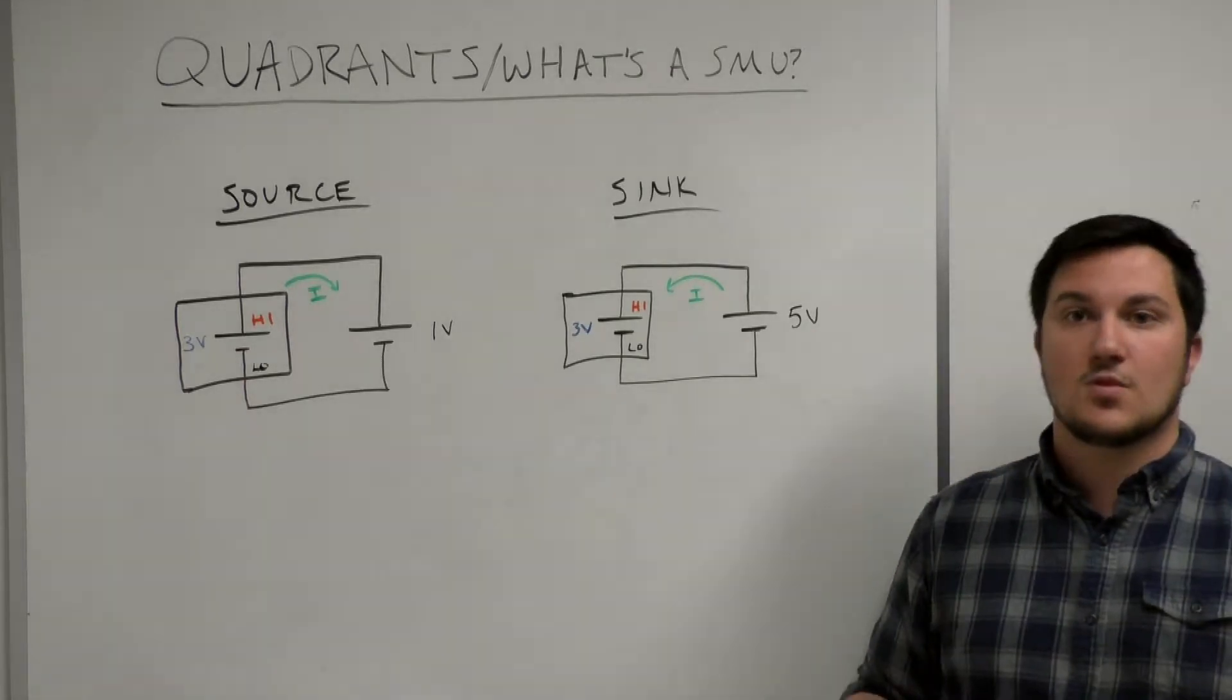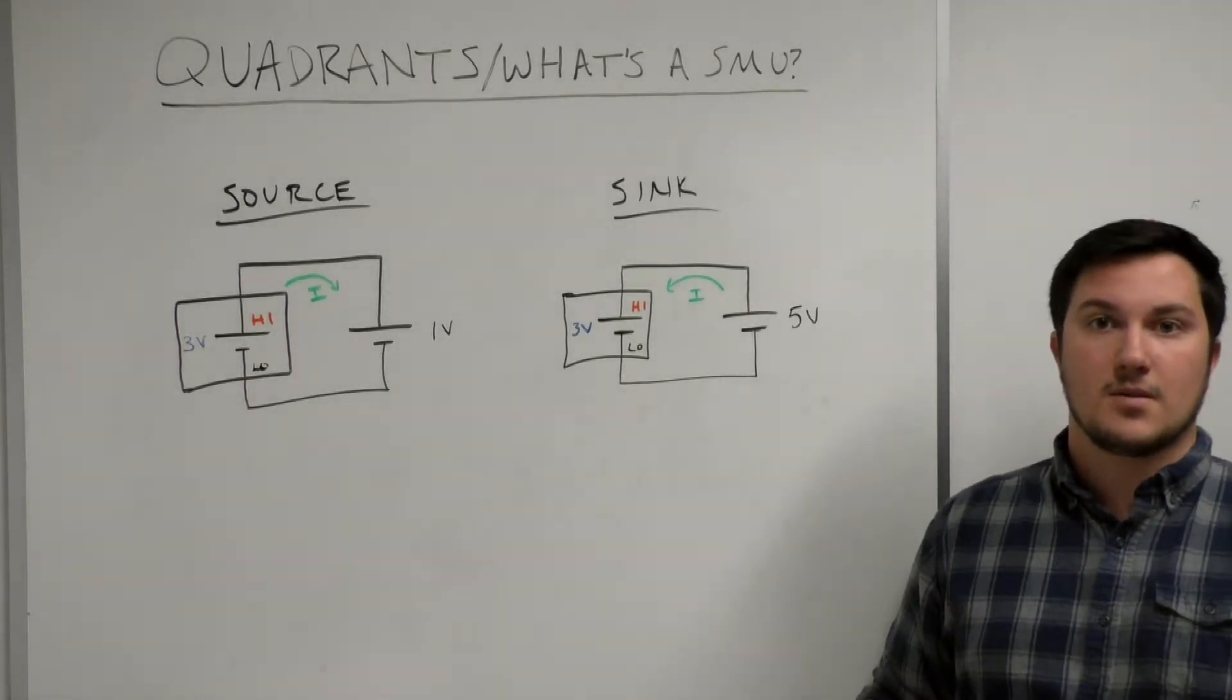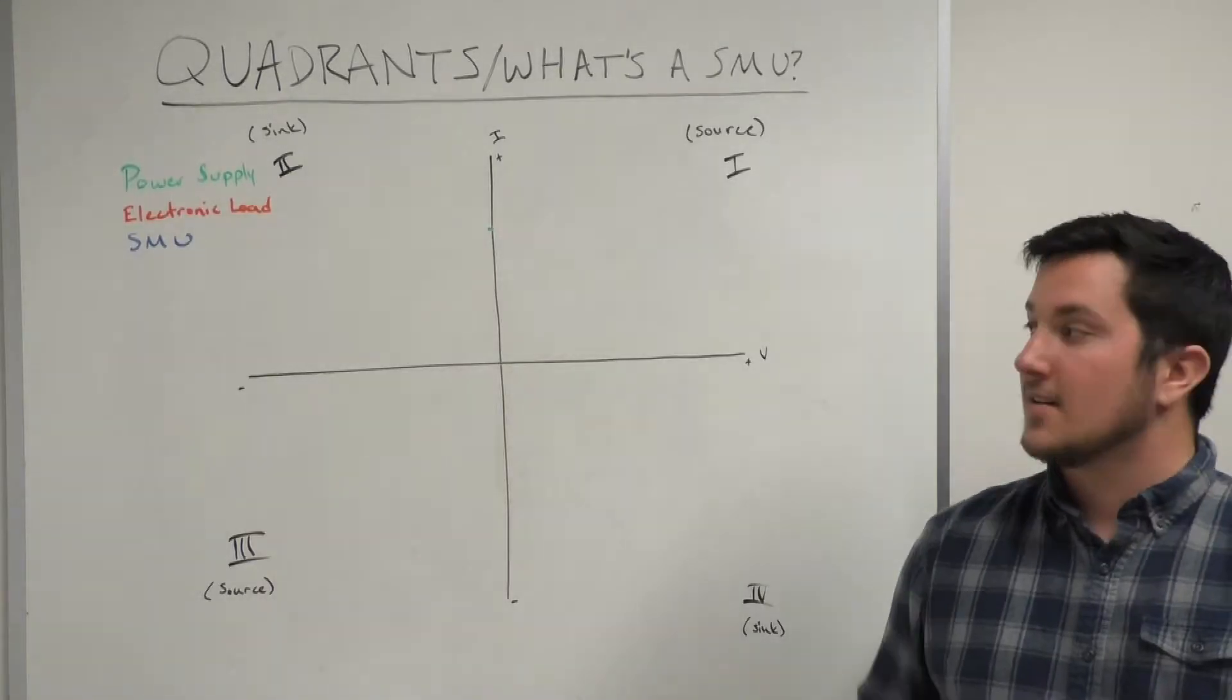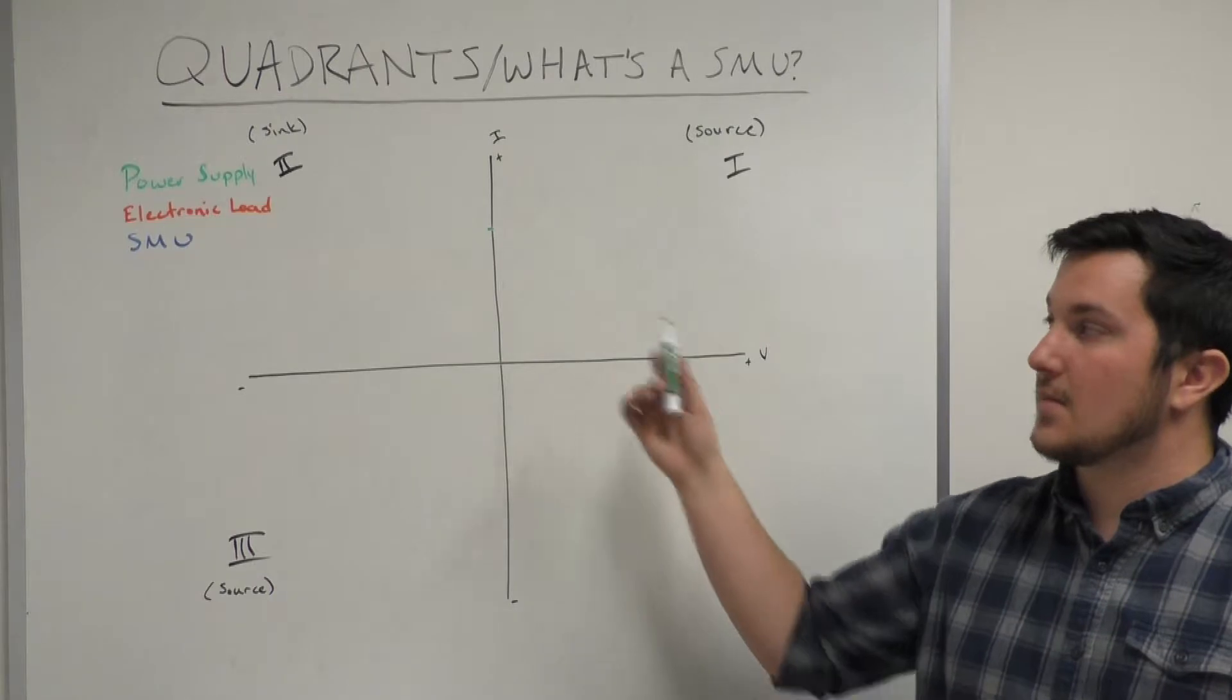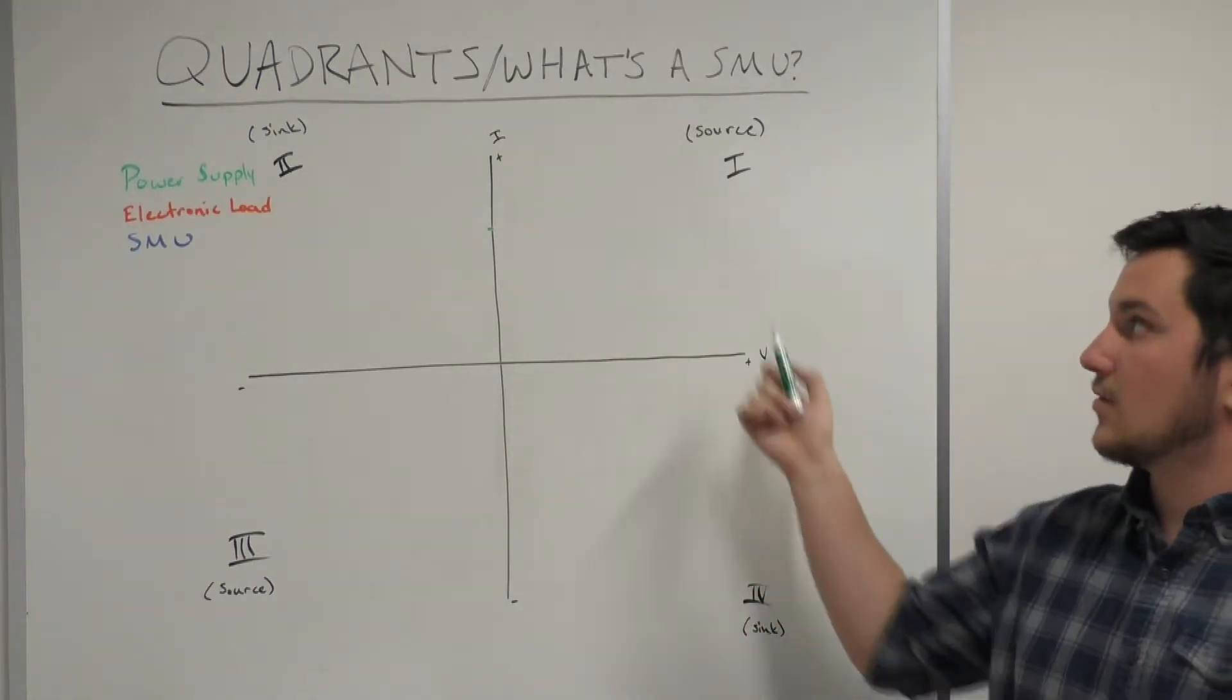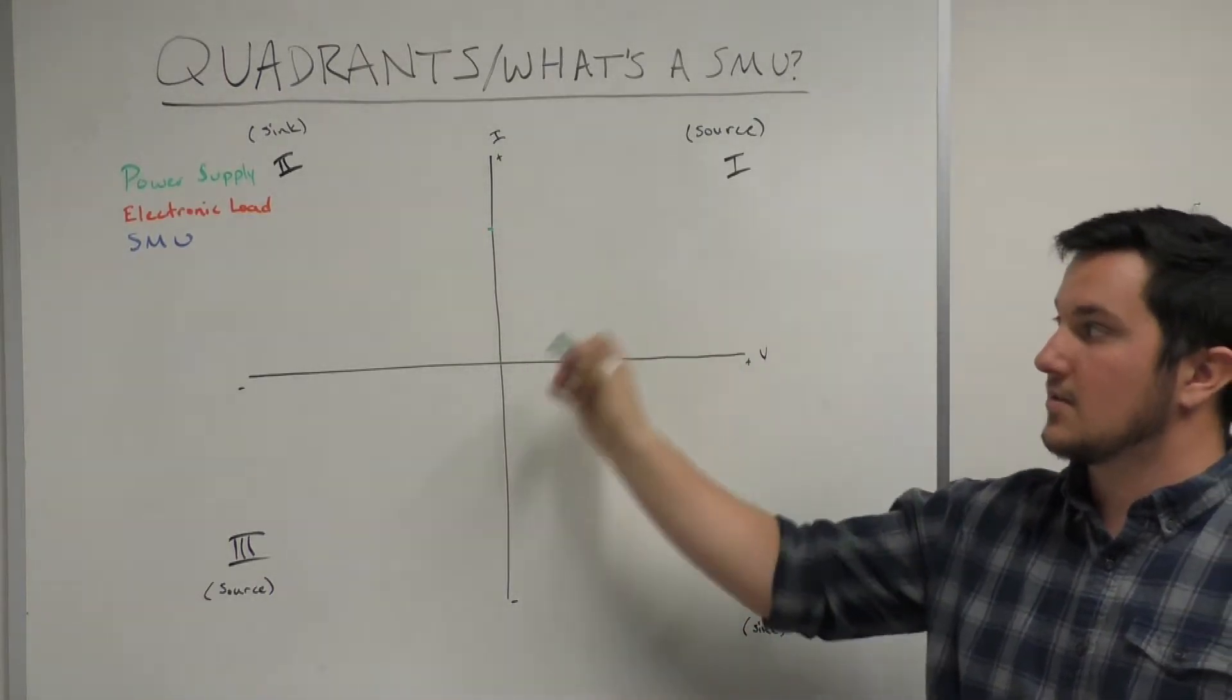Now we're going to take a look at some quadrant diagrams or power envelopes. This is a quadrant diagram or power envelope. It describes the capabilities of an instrument when supplying voltage or current. It's comprised of four quadrants.